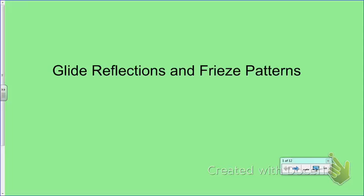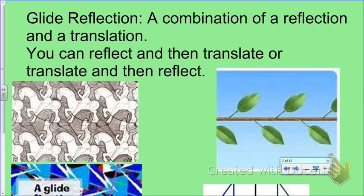In this video we'll be looking at glide reflections and freeze patterns. A glide reflection, which you might remember from working in the computer lab with Geometer's Sketchpad, is a combination of a reflection and a translation. You can reflect a figure and then translate it, or you can translate it first and then reflect it.